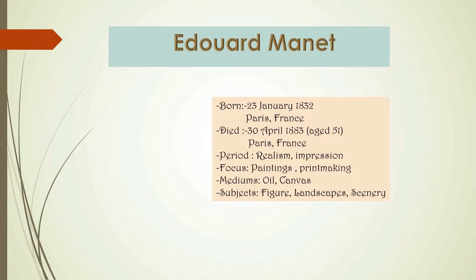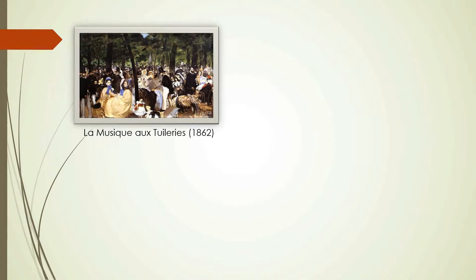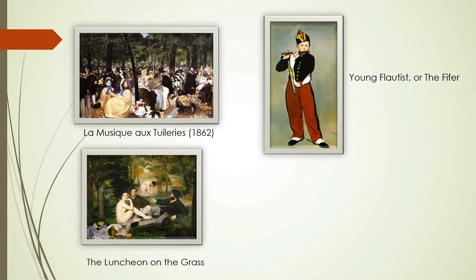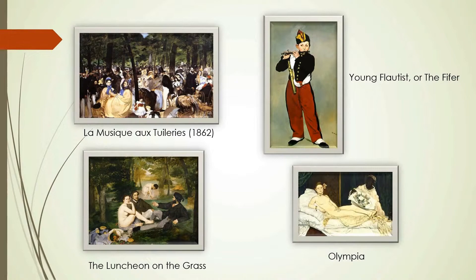Born into an upper-class household with strong political connections, Manet rejected the naval career originally envisioned for him. He became engrossed in the world of painting. His early masterworks, 'The Luncheon on the Grass' and 'Olympia,' both 1863, caused great controversy and served as rallying points for younger painters who would create Impressionism.